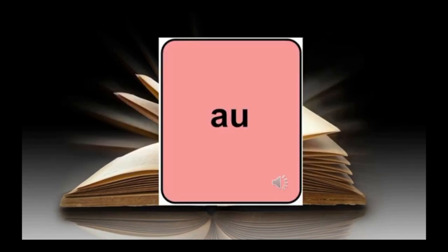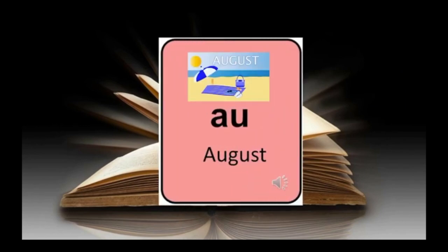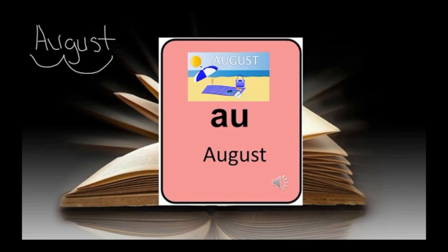Our next sound is AU. AU, August, AW. Notice when I write August — it has two syllables: AW and GUST. AW is a syllable all by itself and it's our double vowel syllable. GUST is a closed syllable.